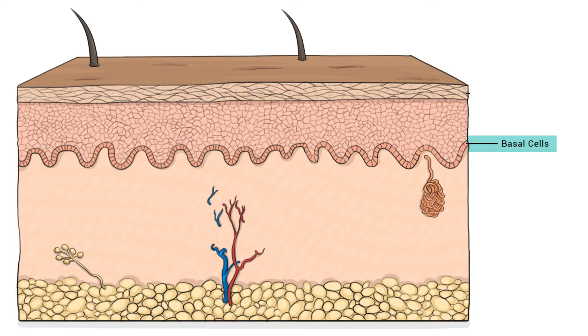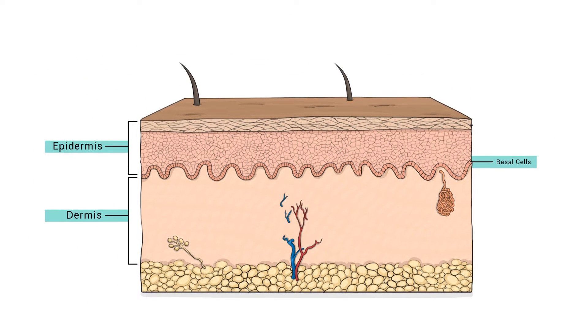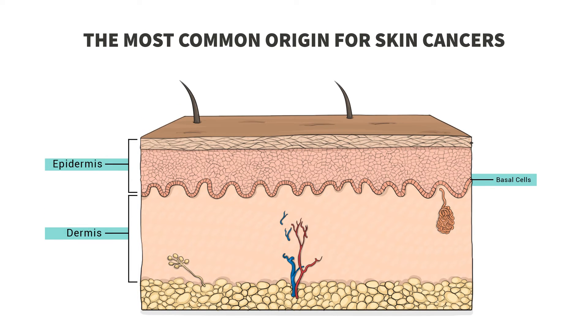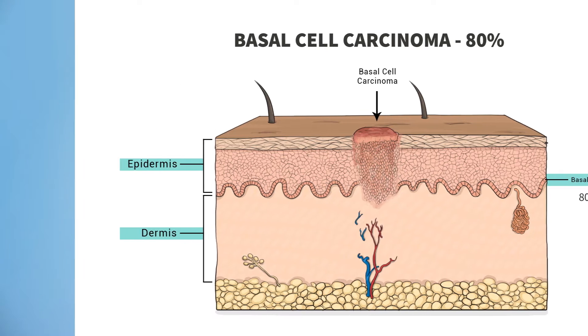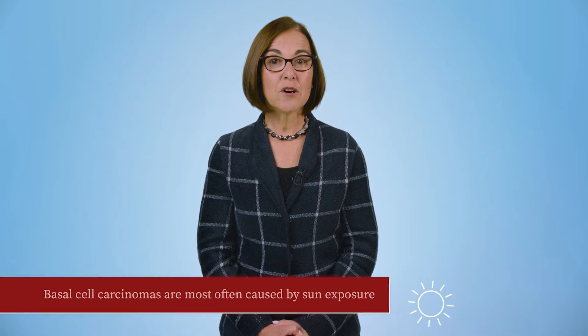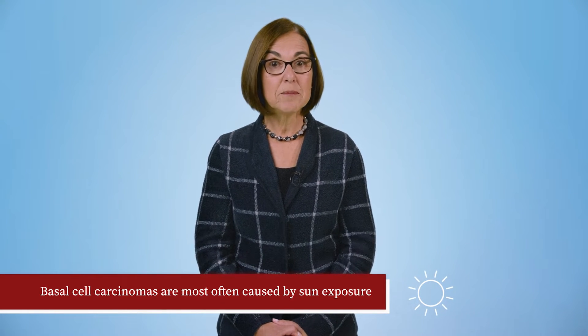Basal cells sit between the two outermost layers of the skin, the epidermis and dermis. They are by far the most common origin for skin cancers, with basal cell carcinomas accounting for about 80% of skin cancers. These cancers can be found anywhere on the body but are most often seen on the head and neck. They are most often caused by sun exposure, or in a small number of cases, by having received treatment with radiation as a child. This type of cancer grows slowly and rarely spreads to other parts of the body.